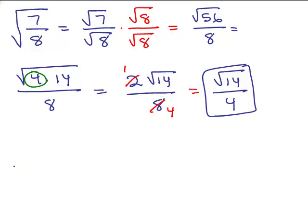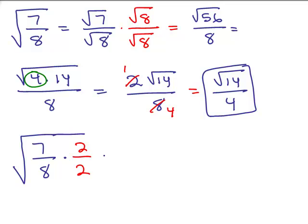Here's another way: 7 eighths. Think — is there something I can multiply the denominator by to get a perfect square? Actually, 2 works because you'll get the square root of 16. So if you see that, in the numerator you're going to have square root of 14, and in the denominator you've got the square root of 16, which is 4. A little bit faster.